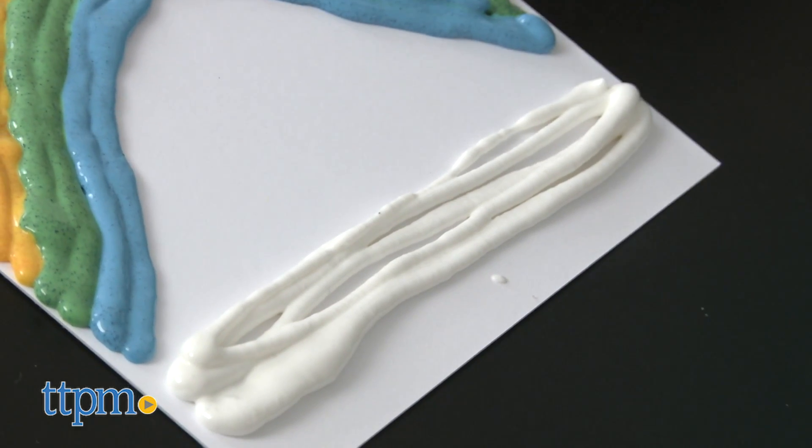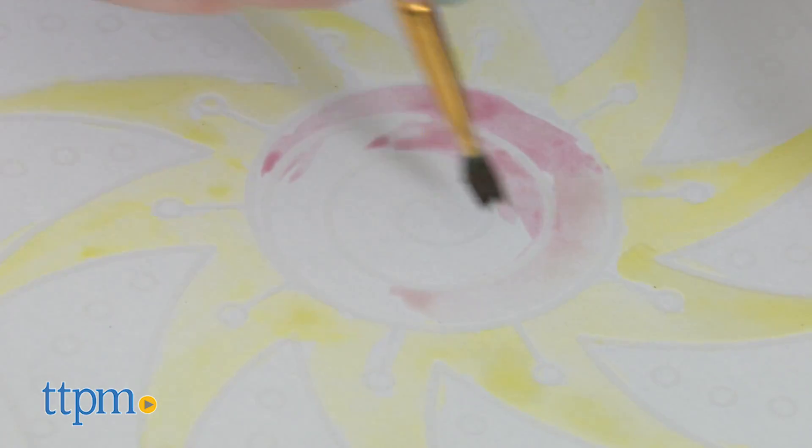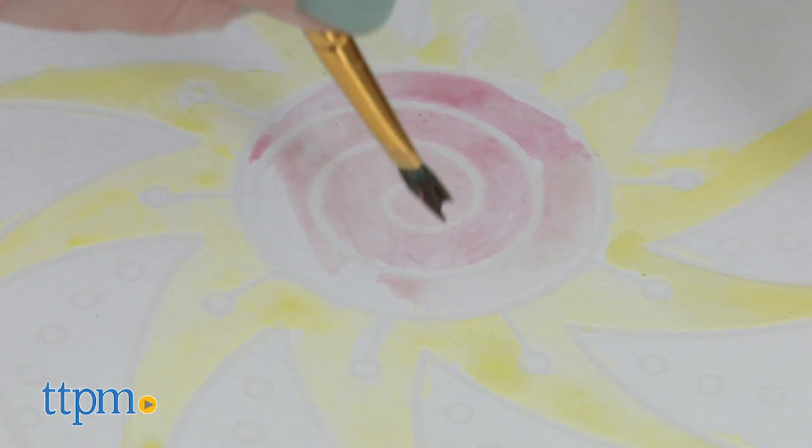Two of the design boards have watercolor resist designs already printed on them to make it a little easier for kids to paint within the lines and get the creativity jump-started.